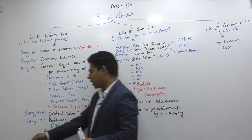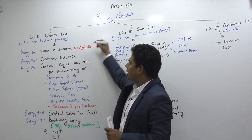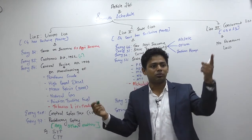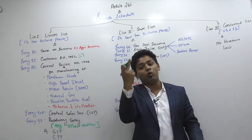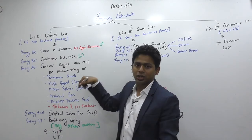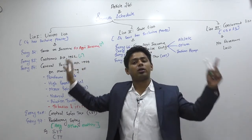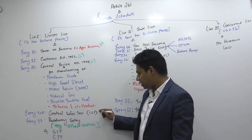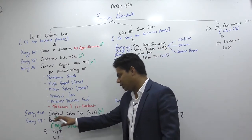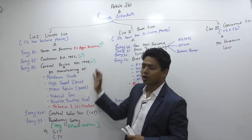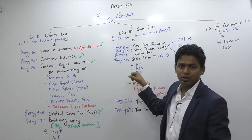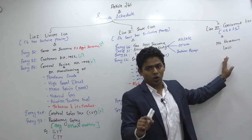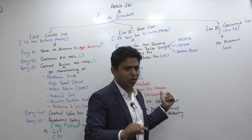GST has not touched income tax — income tax was there and is still there. Customs was there and is still there. Some people believe 'one nation, one tax' means all taxes are gone and only GST exists — that is wrong. Excise was there on all products, now excise is still there on selected products. CST has been mostly deleted. Residuary entry means acts not covered under List 1, List 2, or List 3. In List 3 there is no tax law — tax laws are either in List 1 (central) or List 2 (state).